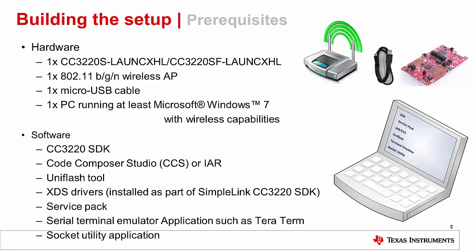Before we proceed, the following hardware should be acquired: a CC3220S or SF launchpad, and an 802.11 BGRN wireless access point. An internet connection is not mandatory. We will also need one micro USB cable and a PC running at least Microsoft Windows 7 with wireless capabilities.